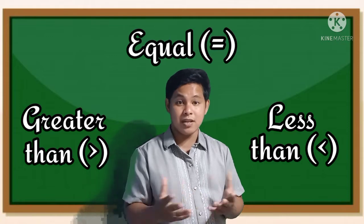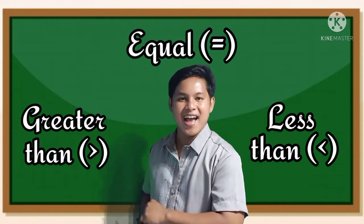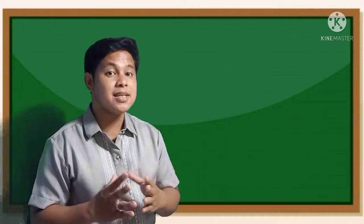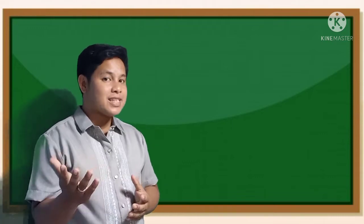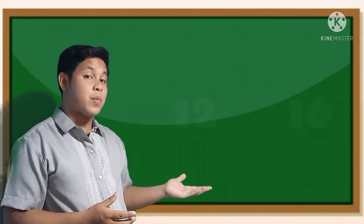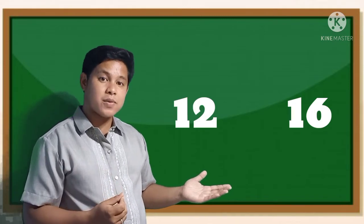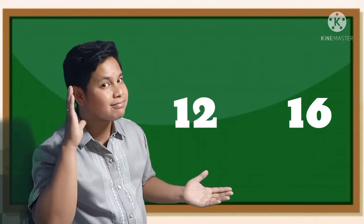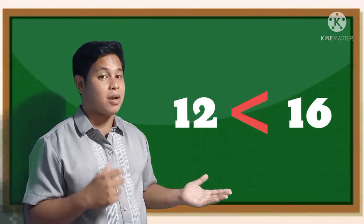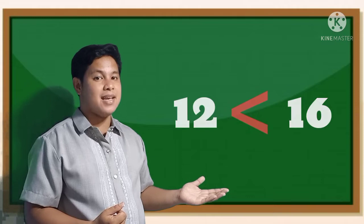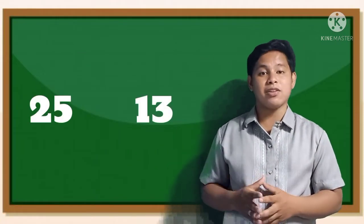Now, can you use those symbols in comparing or ordering numbers? Let's try! Let me see if you can use the symbols correctly. For example, I have here 12 and 16 — what symbol are we going to use? We're going to use less than, because 12 is less than 16.